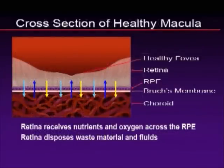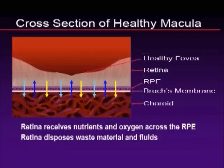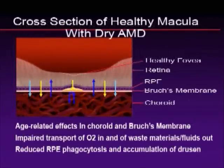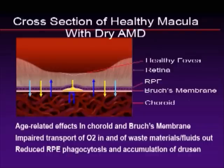Let's look at how macular degeneration really starts. This is a cross-section of a healthy macula. The retinal cells are metabolically active, so they have byproducts of waste. Those waste products come across the RPE through Bruch's membrane into the choroid, where they exit the eye, and nutrition goes the other way. In macular degeneration, we start to get an accumulation of material called drusen between Bruch's membrane and the RPE, and this impairs transport, creating a cycle that feeds on itself.